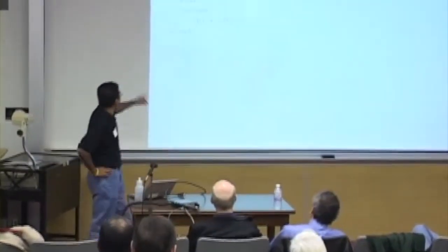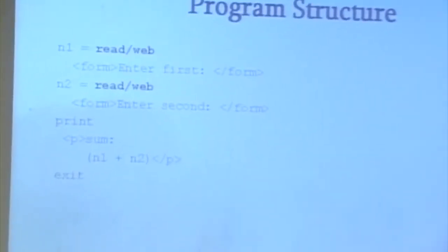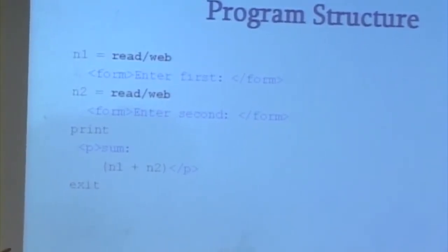Now, let's look at a typical web program. Here's a simple web program that reads two numbers and prints their sum. This is as obvious as code can get, right? Read a number from the web, call it N1. Read another number from the web, call it N2 and print the sum.